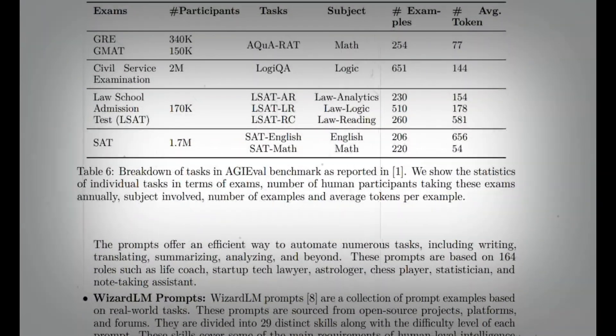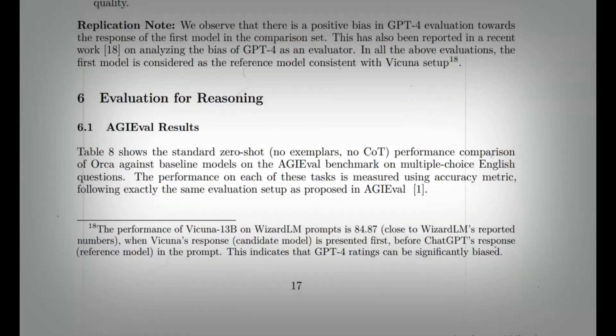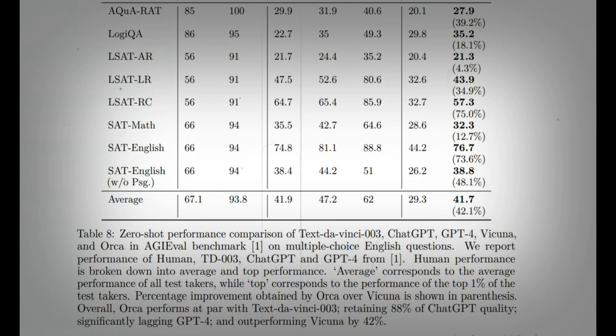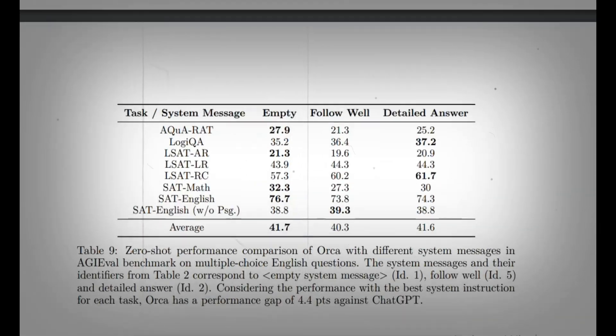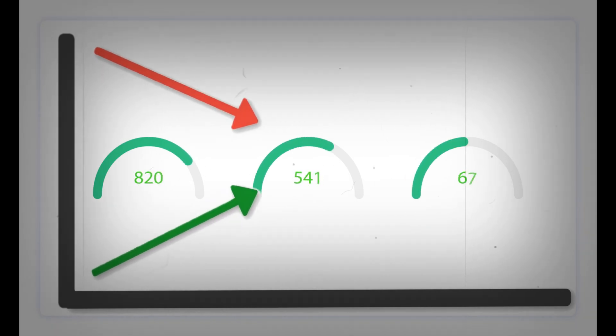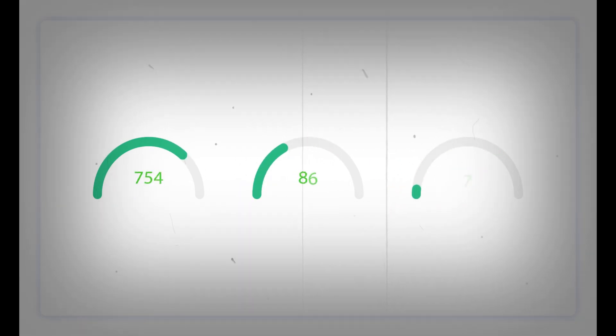To ensure progressive learning, the development team behind Orca utilized large-scale and diverse imitation data. They carefully selected and sampled from this vast dataset, allowing Orca to surpass existing instruction-tuned models by a significant margin. In fact, in complex zero-shot reasoning benchmarks like Big Bench Hard and AGI Val, Orca outperformed other models by more than 100% and 42%, respectively.